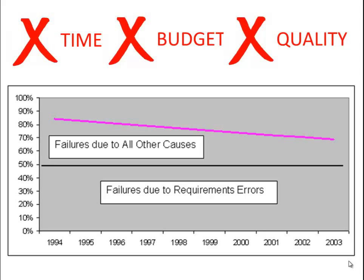We rarely see such low success rates in any other engineering discipline. So what's going on here? Why is software development not like other engineering disciplines? Compared to other engineering disciplines like mechanical or civil engineering, which have been around for hundreds of years, computer and software engineering is relatively new — only around 50 years old.